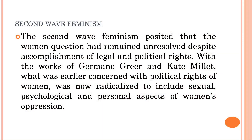In this book, Friedan pointed out that women were still feeling frustrated. They had gained political rights but their status was still not at par with men, and they were confined mostly to household work. The second wave of feminism posited that the women's question had still remained unresolved despite the political and legal rights. With the work of Germaine Greer and Kate Millett, the movement got more radicalized to include psychological and personal aspects of the oppression of women.